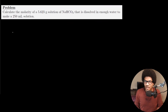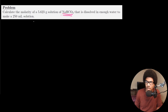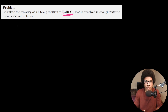This problem says: calculate the molarity of a 5.623 grams solution of sodium bicarbonate that is dissolved in enough water to make a 250 milliliter solution. You're given the mass of your solute — sodium bicarbonate — and the total solution volume is 250 milliliters. The first thing we want to do is figure out how many moles of solute are in this solution, so we need to convert this mass to moles.